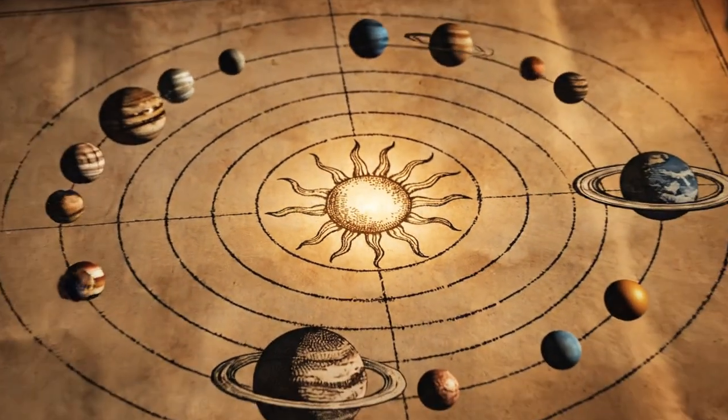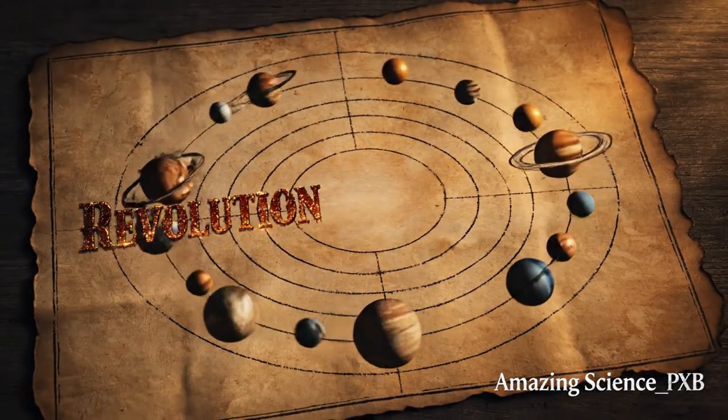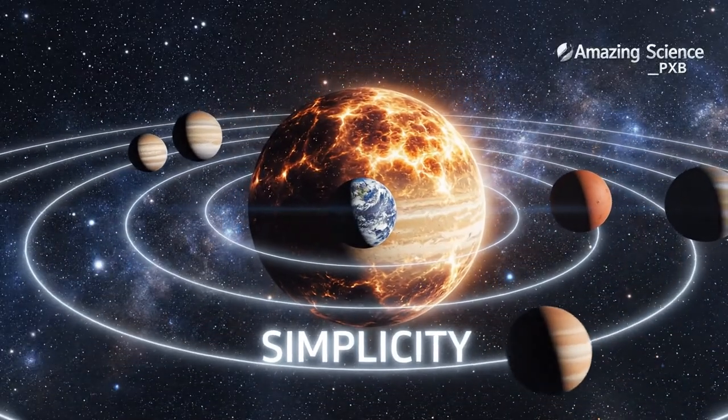Copernicus proposed a radical idea. The Sun is central. Suddenly, planetary motion became simpler.